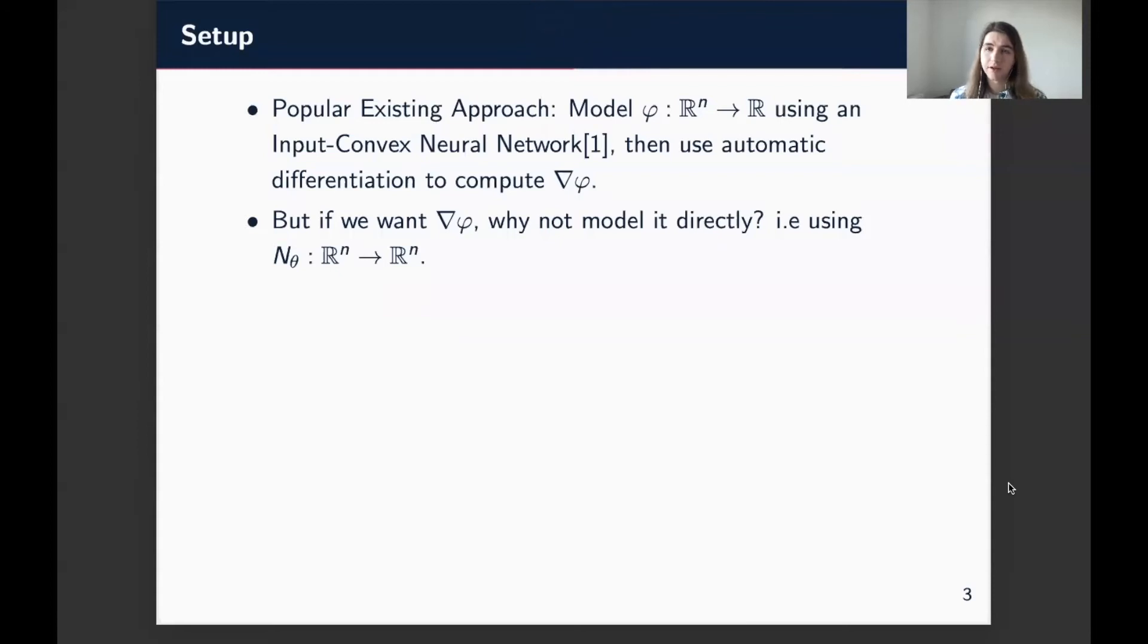But what you might think about is that if what we're really interested in is the gradient of the function itself, and maybe not the actual values of the function, it seems like it would make more sense to model it as a vector field. So to model it directly using a neural network and parameterize the vector field itself.